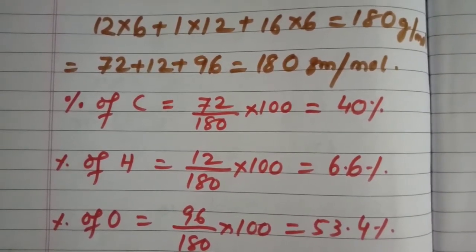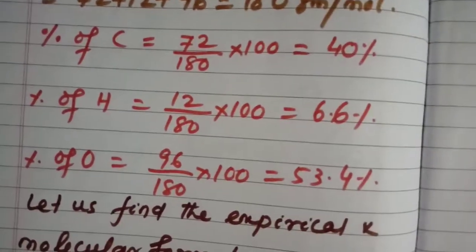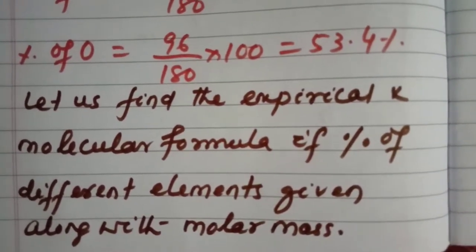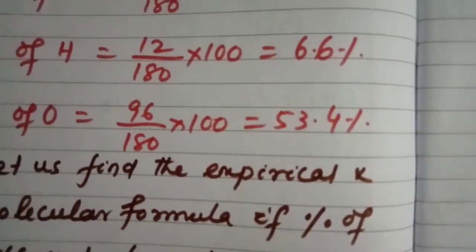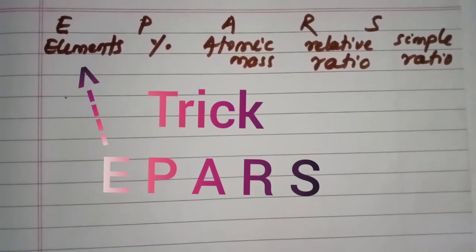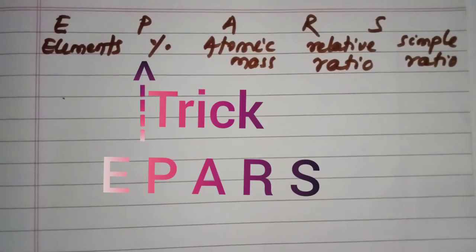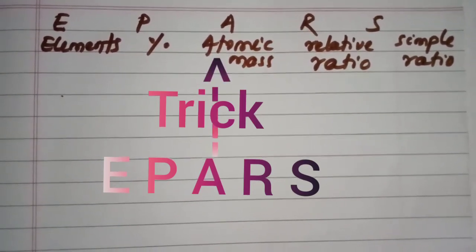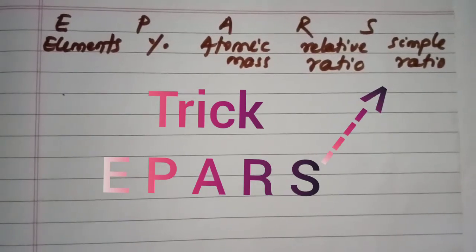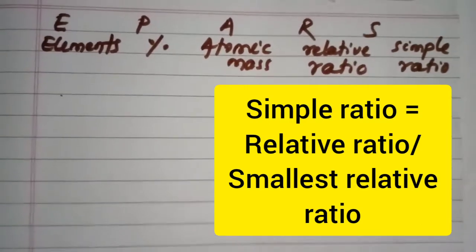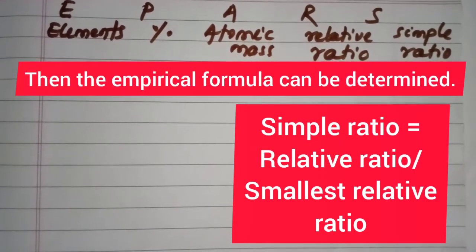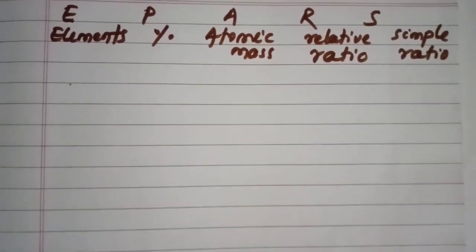Now we will frame a question. Let us find the empirical and molecular formula given the percentage of different elements along with molar mass. During calculation of the empirical formula, you have to write: element, percentage, atomic mass, relative ratio, and simple ratio. The relative ratio R is equal to percentage divided by atomic mass. After getting the relative ratios, divide each relative ratio by the smallest relative ratio to get the simple ratio. Then the empirical formula can be calculated. If you know the molar mass, divide it by the empirical formula mass to get a number, and from that the exact molecular formula can be found.